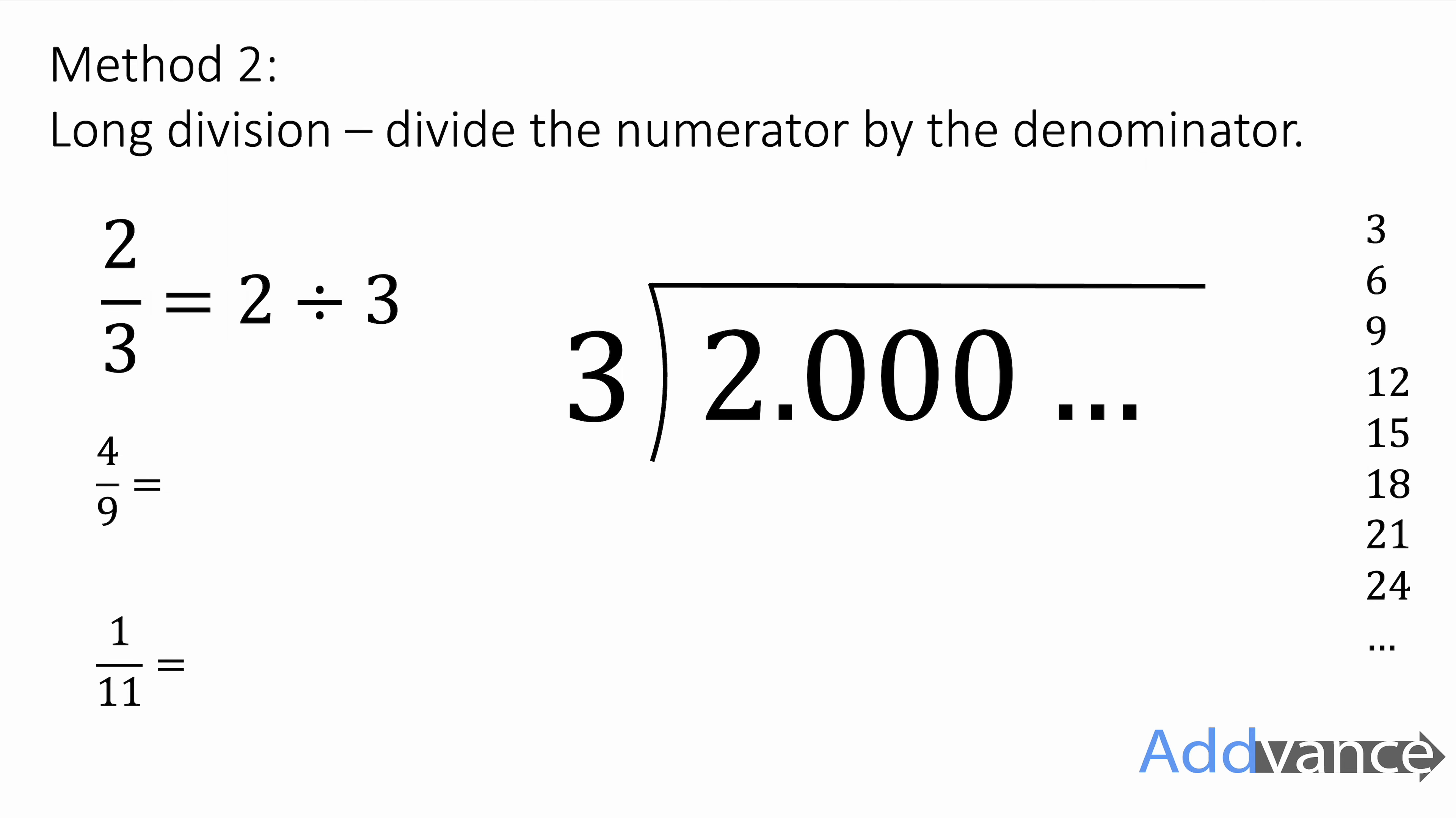How many threes in 2? There are 0, remainder of 2. How many threes in 20? There are 6, remainder 2. How many threes in 20? There are 6, remainder 2. And the decimal continues like that forever. 0.66666, on and on and on.